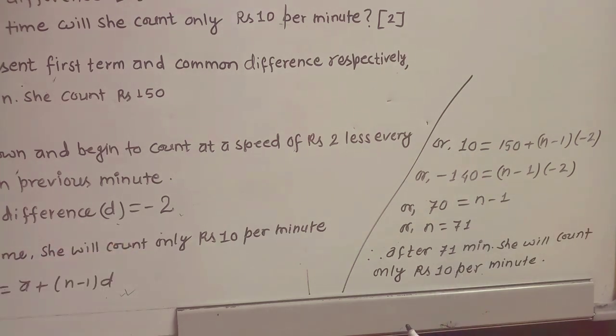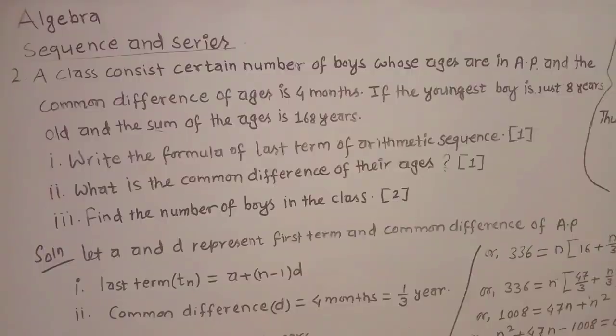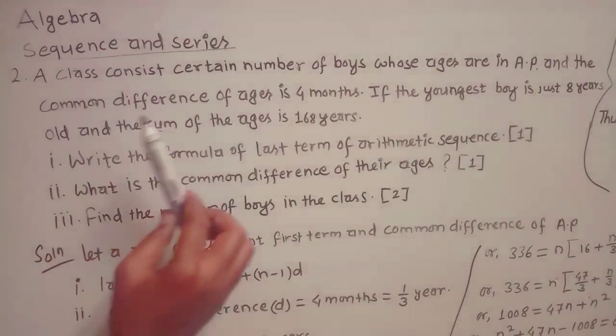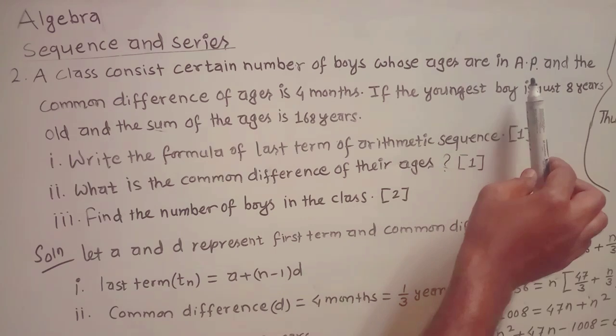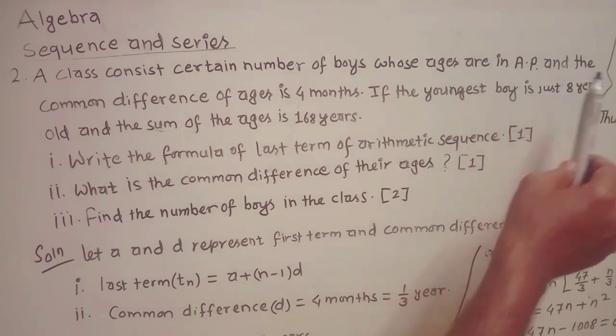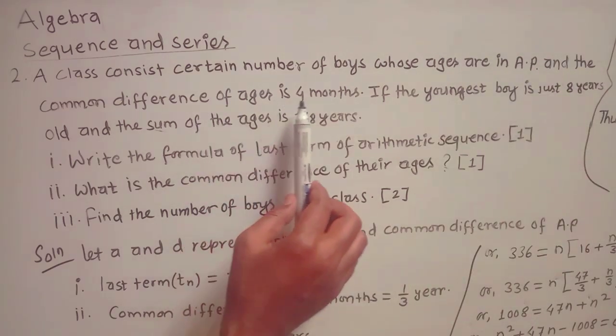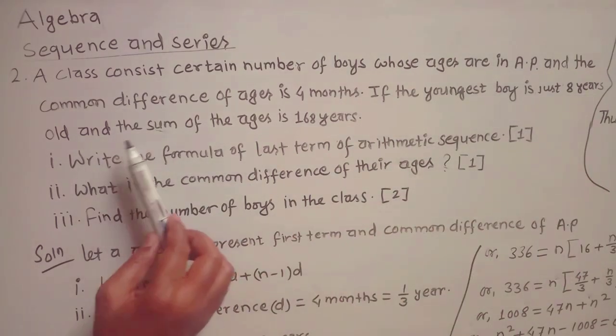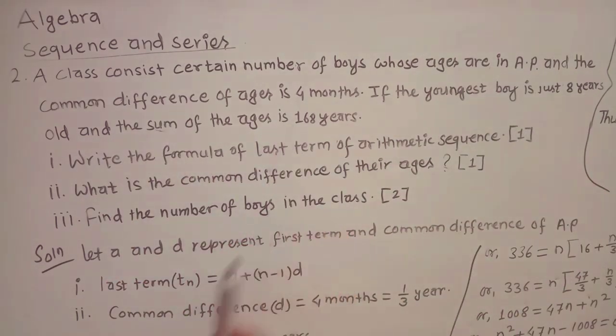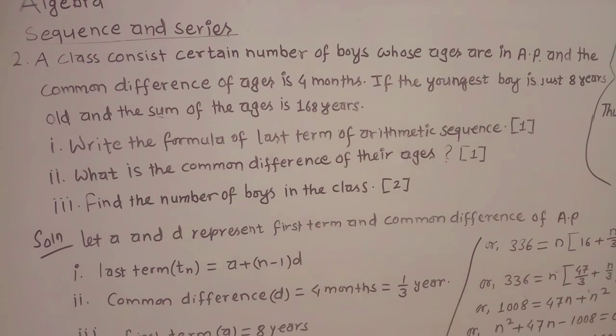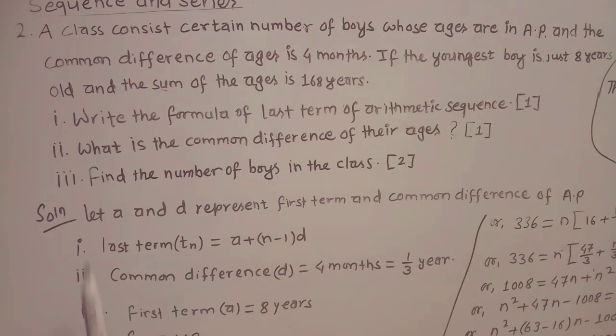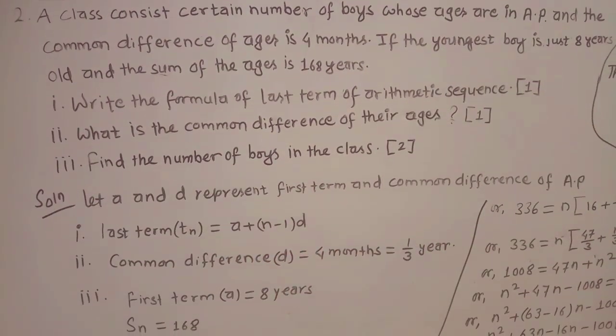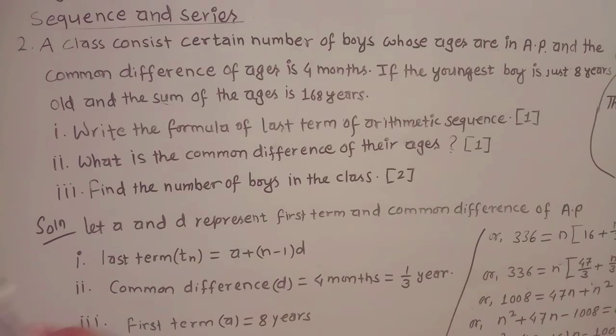Question number 2: A class consists of certain number of boys whose ages are in AP (arithmetic progression) and the common difference of ages is 4 months. If the youngest boy is just 8 years old and the sum of ages is 168 years, write the formula of last term of arithmetic sequence. Second, what is the common difference of their ages? Third, find the number of boys in the class.